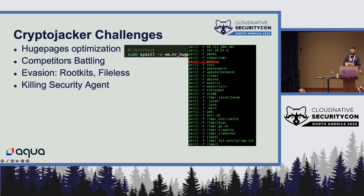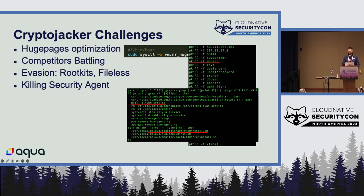We've also seen that bad actors are aware there are other bad actors in the same environment. On our honeypots we see multiple actors battling each other because none of them want to share resources — they try to disable and kill each other's processes. We also see them adopting rootkit and fileless techniques, and they try to disable and remove cloud security agents — for example, the Alibaba Cloud (AliYun) agent and the Google Cloud agent.